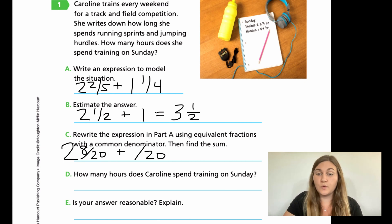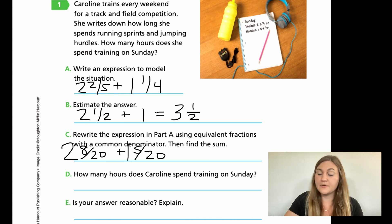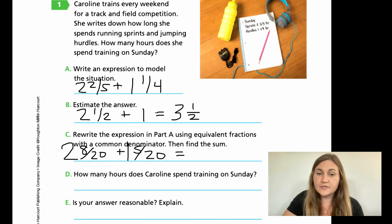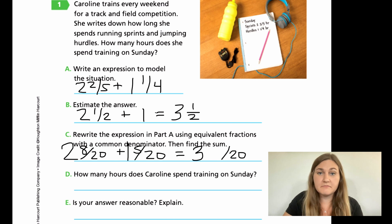And then from 4 to 20, I'm multiplying by 5. So my numerator 1, 1 times 5, is 5. And I can't forget that one whole up in front. Then I need to find the sum. If I add the whole numbers together, 2 plus 1 is going to be equal to 3. My denominator is going to stay 20. And then I have 8 plus 5, which is going to be 13. So 3 and 13/20.